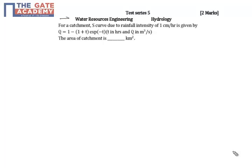This question is from water resource engineering from the topic hydrology. In this question, area of the catchment is asked in kilometer square, where S curve due to rainfall intensity of 1 centimeter per hour is given by Q = 1 - (1 + t)e^(-t), where t is in hours and Q is meter cube per second. We know that this is S curve.